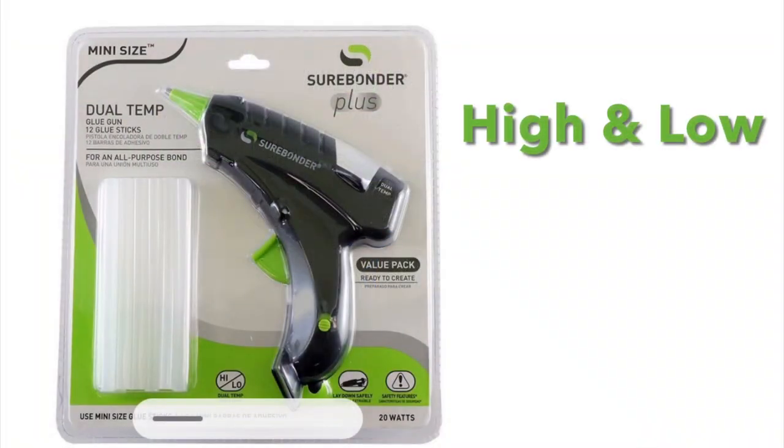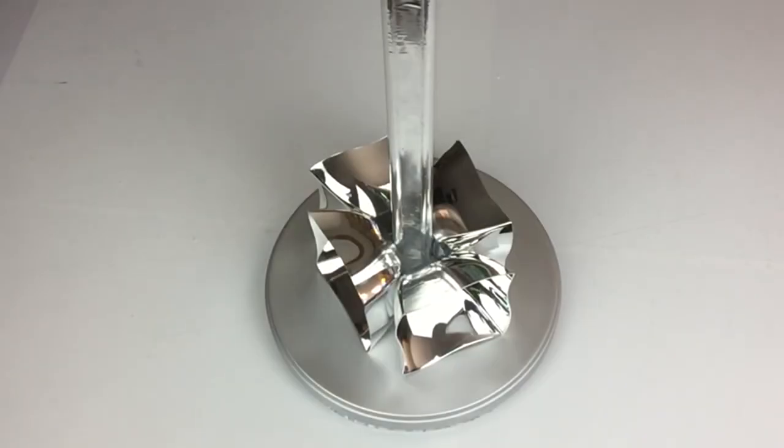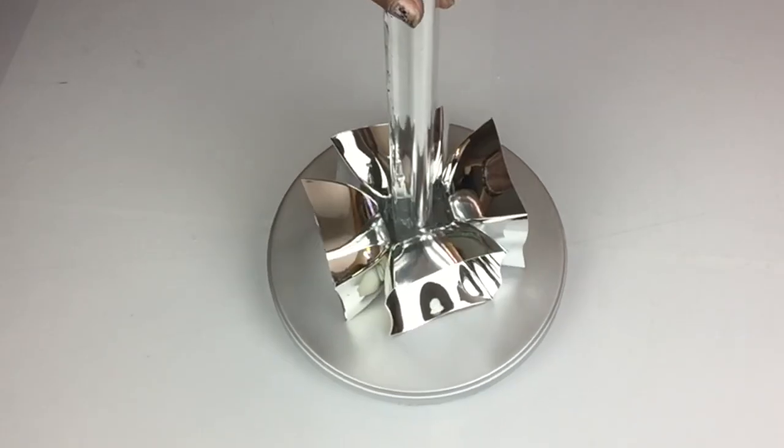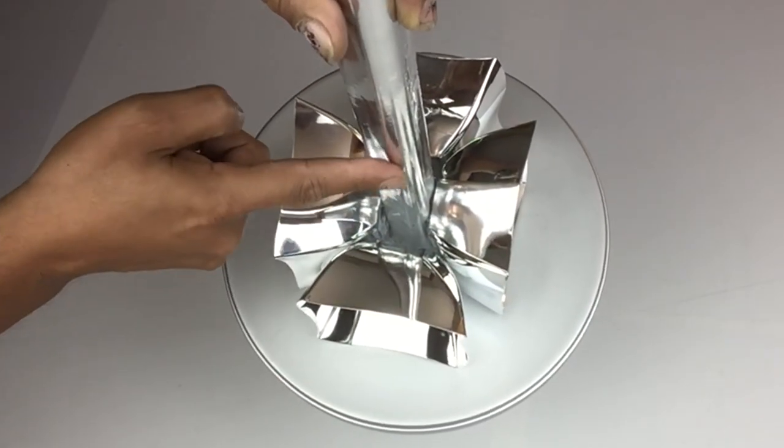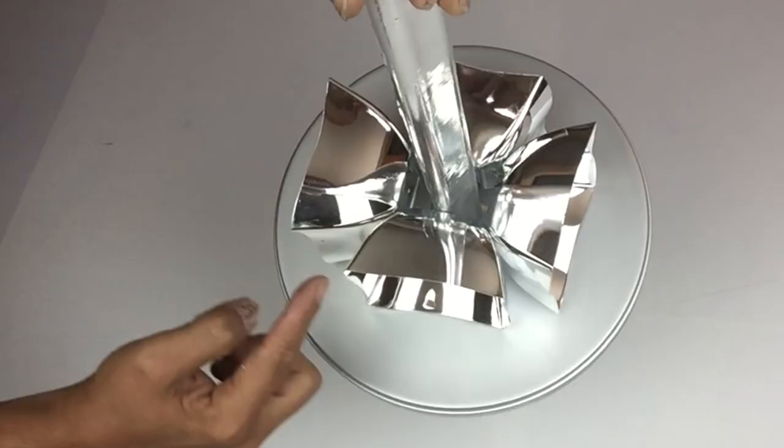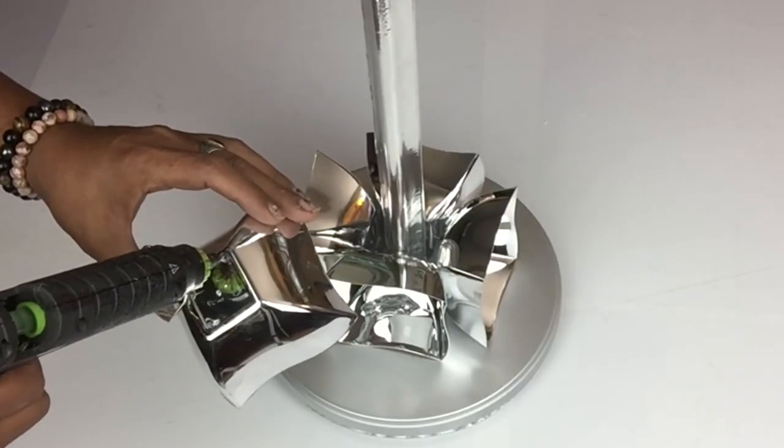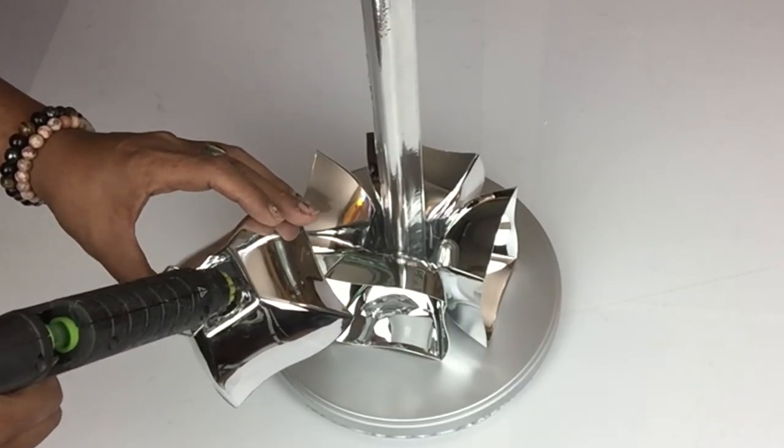I'll be using my glue gun on a low temperature so it won't damage my dessert bowls. Here I already glued on the first four dessert bowls onto my base so you'll have an idea on how they will position. Next I'll continue gluing all my bowls in between the spaces. The first two I will glue them onto the rod, and the next two I will glue them to the bowls.